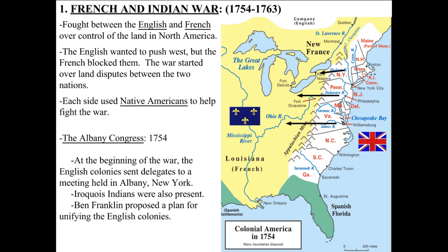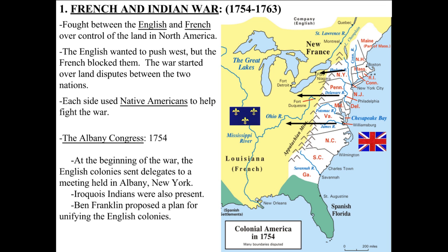In 1754, the Albany Congress was called. The problem the colonies ran into was that they were basically acting as separate entities — New York did its own thing, Pennsylvania did its own thing, Massachusetts its own thing — and each colony individually was unable to protect itself. But Ben Franklin had a proposition: he proposed a plan to unify the English colonies, to bring them together so that they worked together to protect each other.